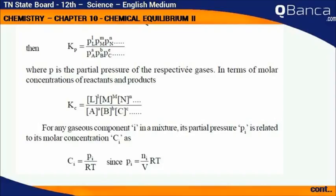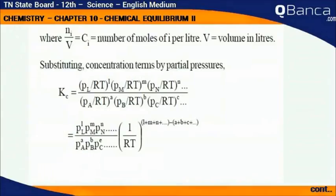For any gaseous component i in a mixture, its partial pressure pi is related to its molar concentration Ci as Ci equals pi by RT, since pi equals ni by V times RT, where ni by V equals Ci equals number of moles of i per liter. V is volume in liters.